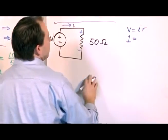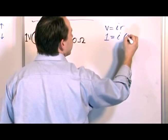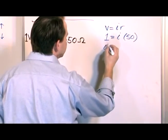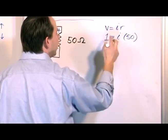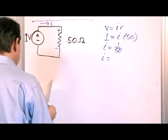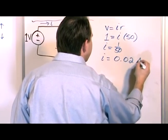Is equal to I. We don't know what I is, but the resistance we know is 50 ohms. So we have volts and ohms, so the units are fine. So the current is 1 divided by 50. So the current, 1 divided by 50 is 0.02 amps.